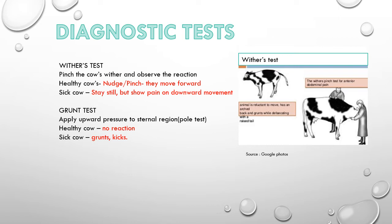The first diagnostic test is the withers test. When we pinch the cow's withers and observe the reaction, in a healthy cow the nudge or pinch makes the cow move forward. But in a sick cow with TRP, they stay still but show pain or a downward movement. The second test is the grunt test, where we apply upward pressure to the sternal region. In a healthy cow there is no reaction, but in a sick cow with TRP it grunts and kicks. This grunt test is also known as the pole test.